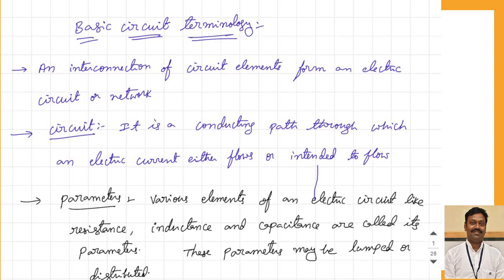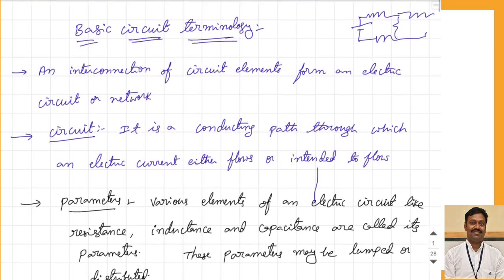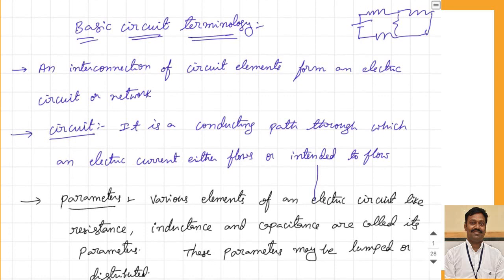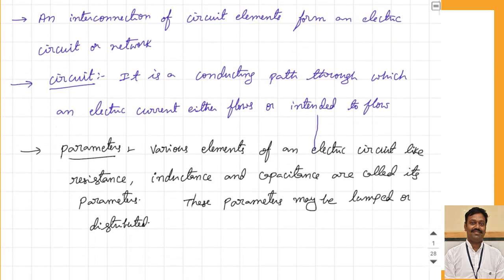The interconnection of circuit elements forms one electrical circuit. For example, I take some resistors and interconnect them, then connect some voltage — this forms one circuit. The definition of a circuit is: it is the conducting path through which an electric current either flows or is intended to flow. That means you design some circuit or equipment through which you want current to flow — that is called a circuit.